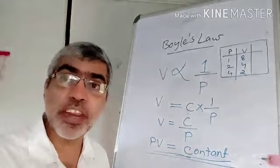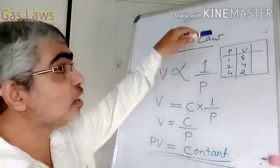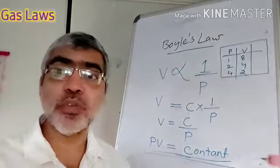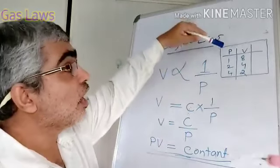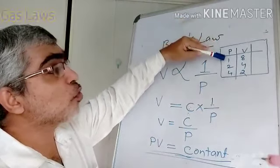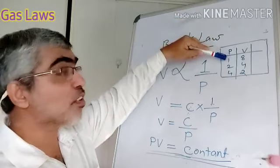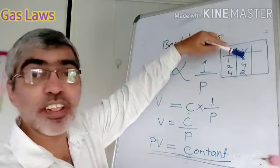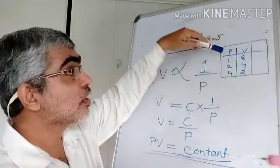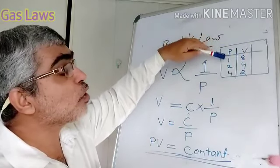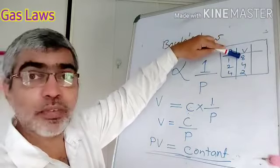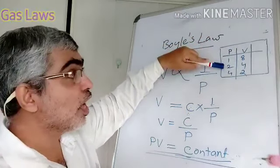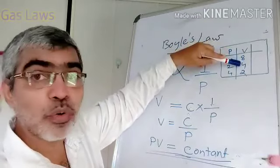For example, if we take hydrogen gas at constant temperature: at one atmosphere pressure, the volume is 8 liters. If we increase the pressure to two atmospheres, the volume becomes 4 liters. At four atmospheres pressure, the volume becomes 2 liters.